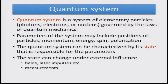The quantum systems we have been using are those of elementary particle nature — for example, photons, electrons, or nuclei governed by the laws of quantum mechanics. Parameters of the system may include positions of particles, momentum, spin, and polarization — all things utilized for implementing a quantum computer. The quantum system can be characterized by its state responsible for the parameters. The state can change under external influence, and by using fields, laser impulses, etc., the concept of computing has been implemented. Measurements are the last and most important part of this entire exercise so that these can finally be used as computation.